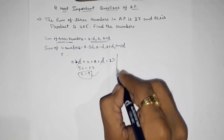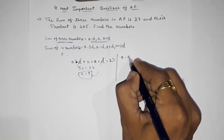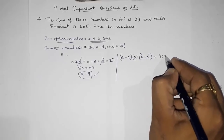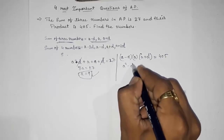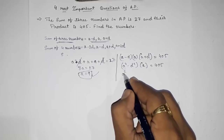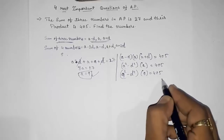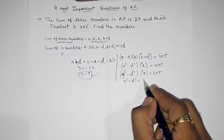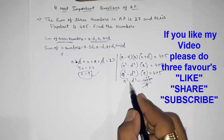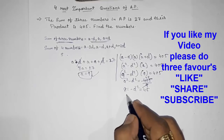From the sum we get A, and from the product we will get D. Their product is: (A minus D) times A times (A plus D) equals 405. Using the identity, A squared minus D squared, times A equals 405. Since A is 9, we get 9 squared minus D squared, times 9 equals 405. Dividing both sides by 9 gives 81 minus D squared equals 45.